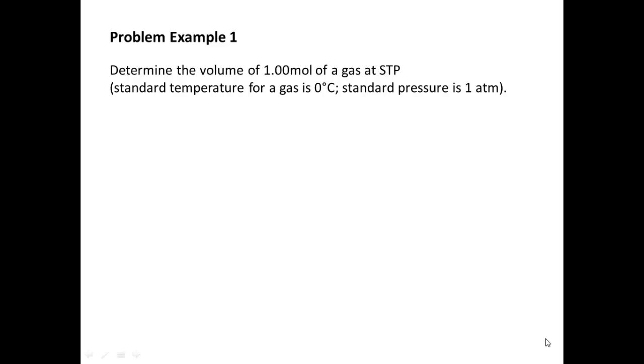So we're going to be using our ideal gas equation, and in this problem we see that we need to determine the volume of 1.00 moles of a gas at STP, and STP is defined as standard temperature and pressure. For a gas, this is at 0 degrees Celsius and 1 atmosphere. So let's write our equation, PV equals nRT. What I like to do to start myself off is I like to write all of my variables on the side, PVNRT.